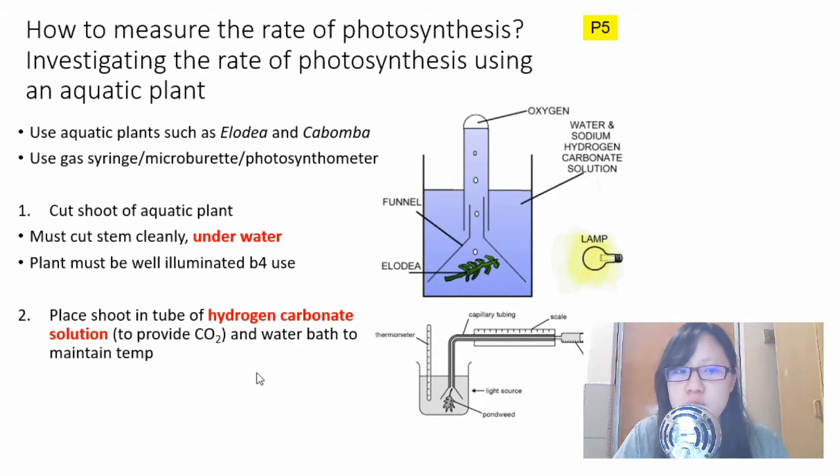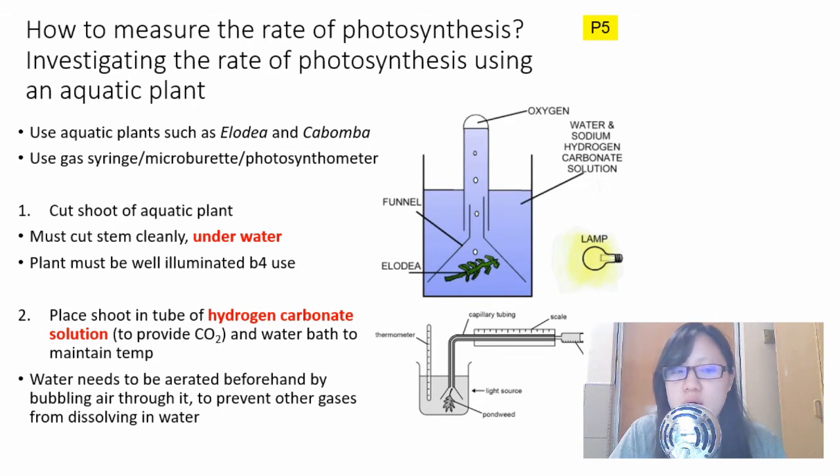After that, place the shoot in a tube of hydrogen carbonate solution. This water is not just water - it's water with hydrogen carbonate solution to provide the CO2 needed to carry out photosynthesis. The water bath around it maintains temperature and keeps it constant throughout the experiment. Before doing this, the water must be aerated beforehand to prevent other gases from dissolving in it, so it's saturated with dissolved gases already.